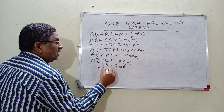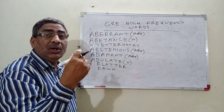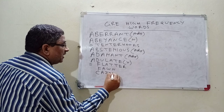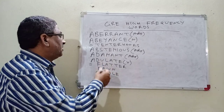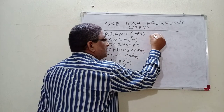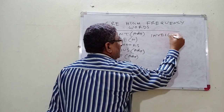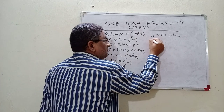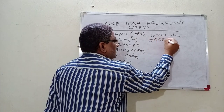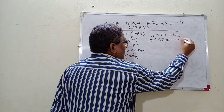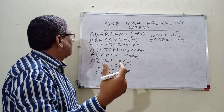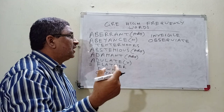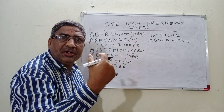More synonyms for adulate: cajole, inveigle, obsequiate — all meaning to praise excessively. So adulate, flatter, fawn, cajole, inveigle, and obsequiate are all words occurring in a majority of examinations.